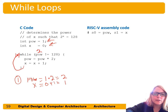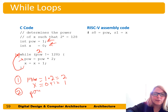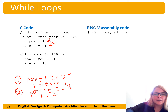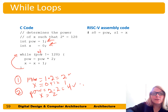Second iteration: power is now 2, still not equal to 128, so we execute the loop body again. Power equals 2 times 2 equals 4, and x equals 2. Third iteration: power is 4, still not equal, and this continues until we finally get to 128.